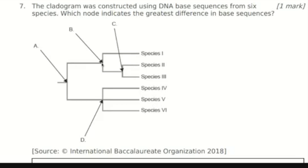This ancestor at B gives rise to one branch, and then it goes here and branches into two again, so there is an ancestor in between. You can think of it like this is the grandparent node, then this is the parent node, and these are the two offspring nodes.